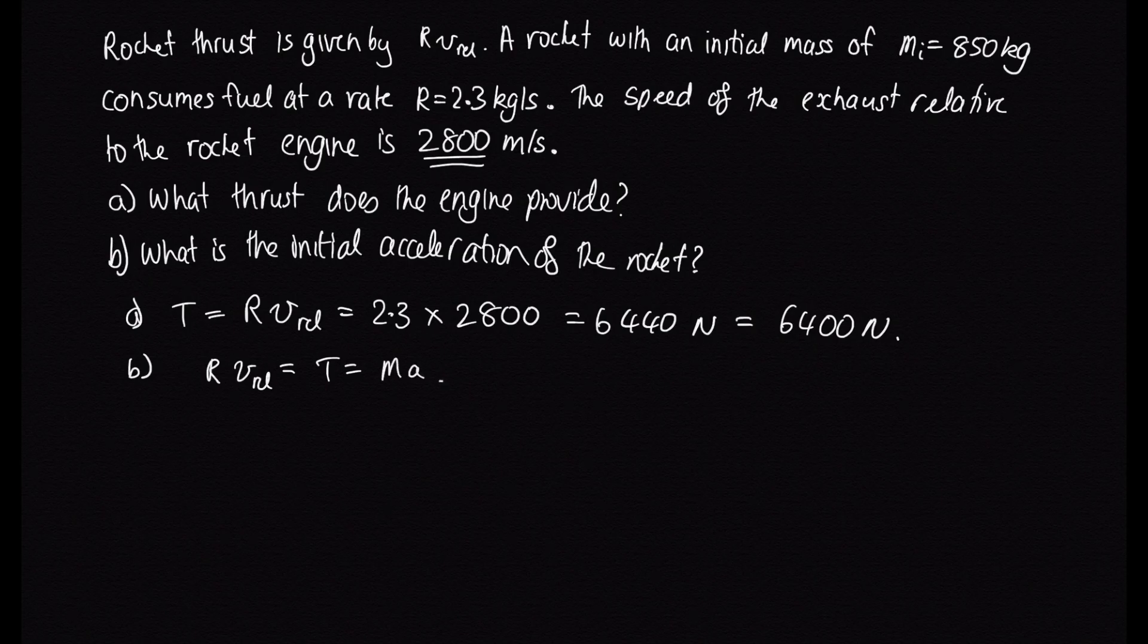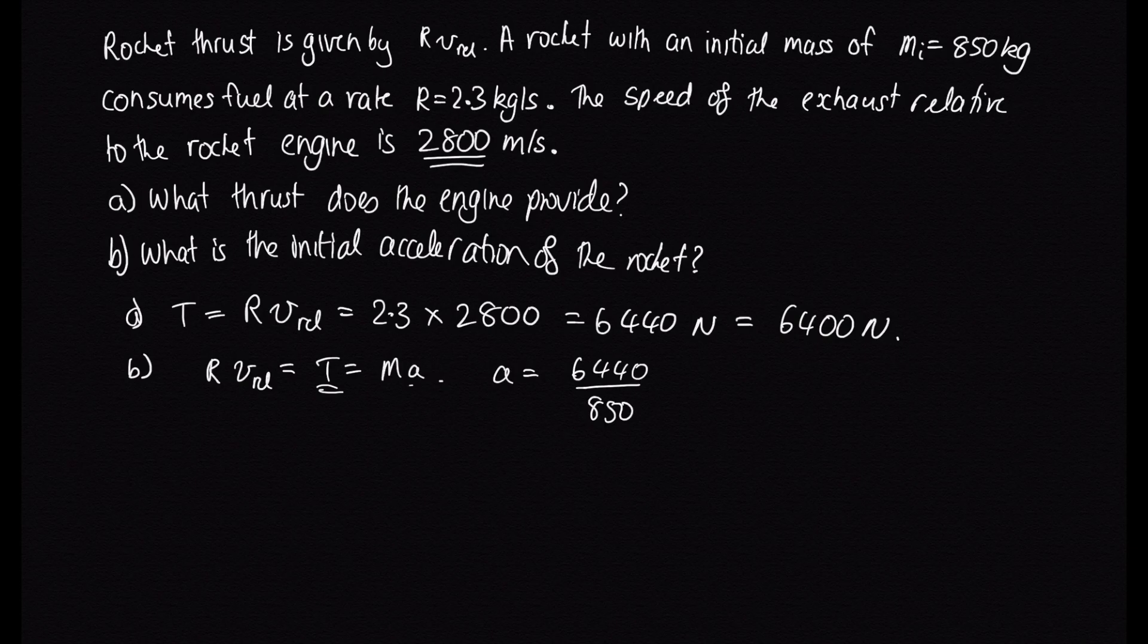So we have that the acceleration is equal to the thrust, which is 6440 over the mass of the rocket. And the rocket has a mass of 850 kilograms. So putting that into the calculator, we end up with 7.6 meters per second per second.